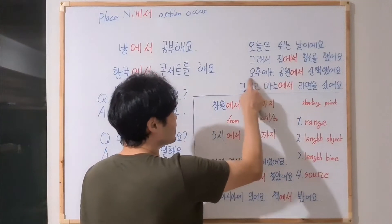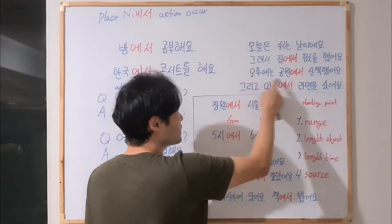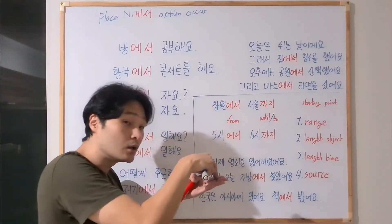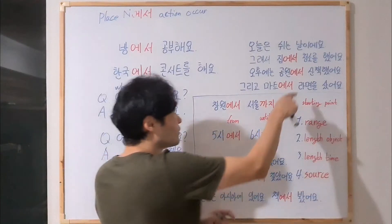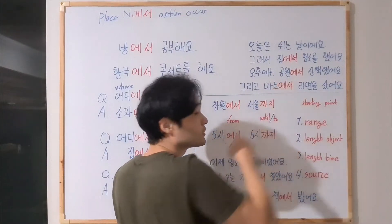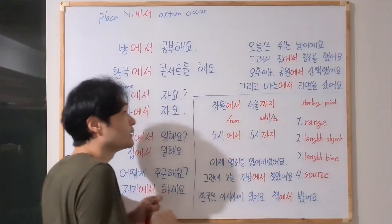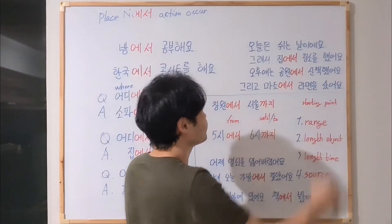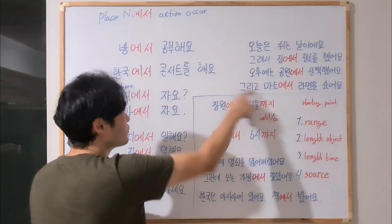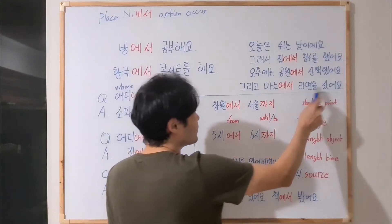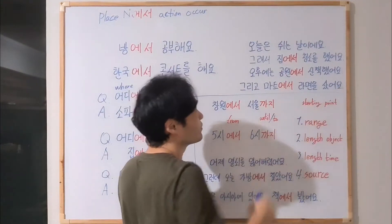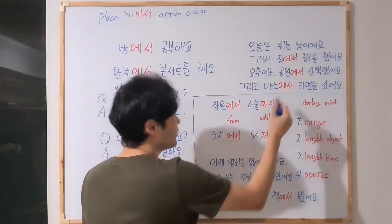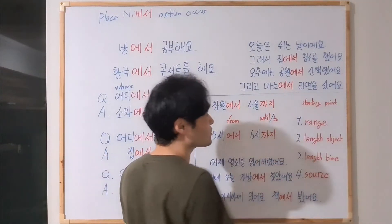오후에는 공원에서 산책했어요 — in the afternoon, I took a walk in the park. 공원에서 — in the park. 그리고 마트에서 라면을 샀어요 — and I bought ramyeon at the supermarket.